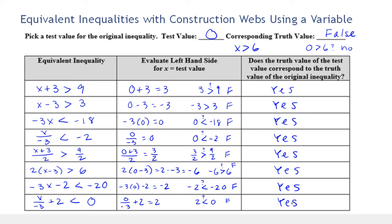So again, not conclusive proof. But using the idea of a test value is going to help us in many ways later — not only as a quick check that's not conclusive, but also as a good indicator of whether you solved the inequality correctly, and for determining which direction to graph when we start graphing inequalities.